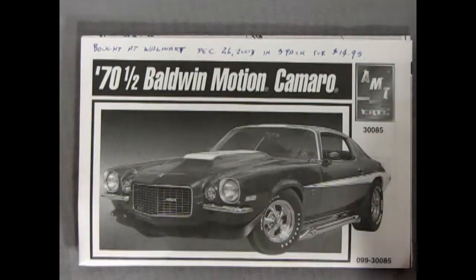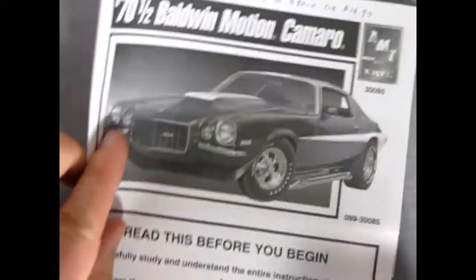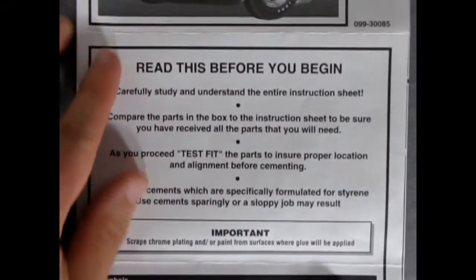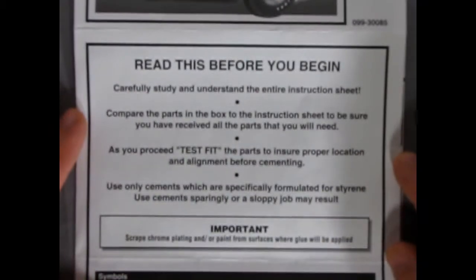And here we have our instructions for our 70.5 Baldwin Motion Camaro. And as you can see, we've got a nice picture of the Camaro. And then we get this nice panel here that says, read this before you begin. Carefully study and understand the entire instruction sheet. Compare the parts in the box to the instruction sheet to be sure you have received all the parts that you will need.